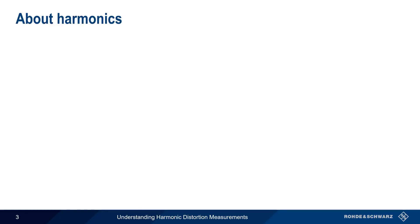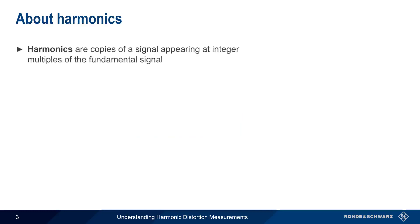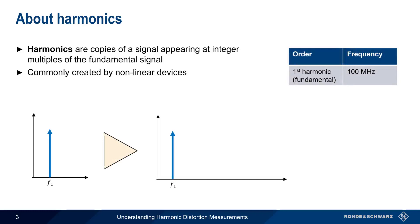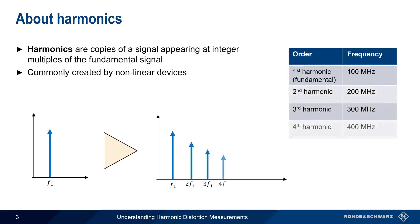Let's start with an overview of harmonics. Harmonics are copies of signals that appear at integer multiples of a fundamental frequency. These are usually created by so-called non-linear devices, such as amplifiers. For example, when a signal at 100 MHz passes through a non-linear device, the output contains not only the original signal, but it also contains harmonics of that signal at 200 MHz, 300 MHz, 400 MHz, 500 MHz, etc.